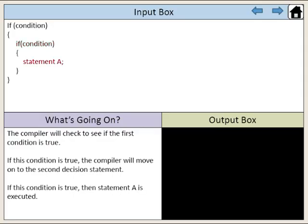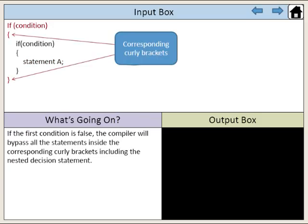If this condition is true, then statement A is executed. If the first condition is false, the compiler will bypass all the statements inside the corresponding curly brackets, including the nested decision statement.